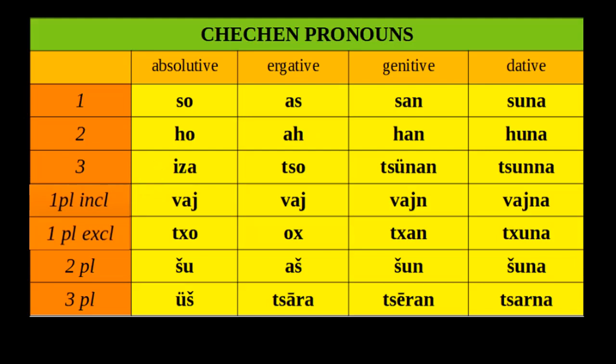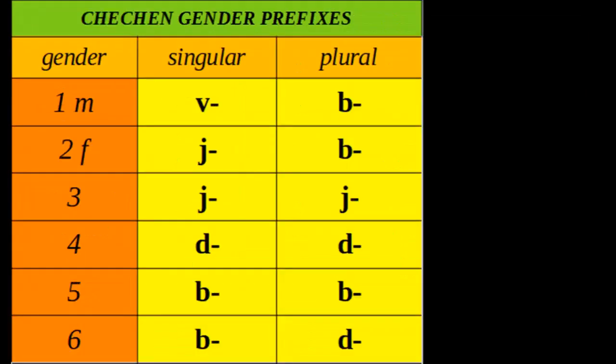There is no gender distinction in the third person pronoun: isa in the singular and ish in the plural, which change to tso and sara in the ergative — they mean both he and she as well as it. Now the gender prefixes of Chechen: not only does Chechen have six genders, but the agreement particles are not at the end of the word as in European languages like German, Spanish, French, or Russian. The gender element is at the beginning of the word, which reminds us of African languages such as Swahili and Zulu.